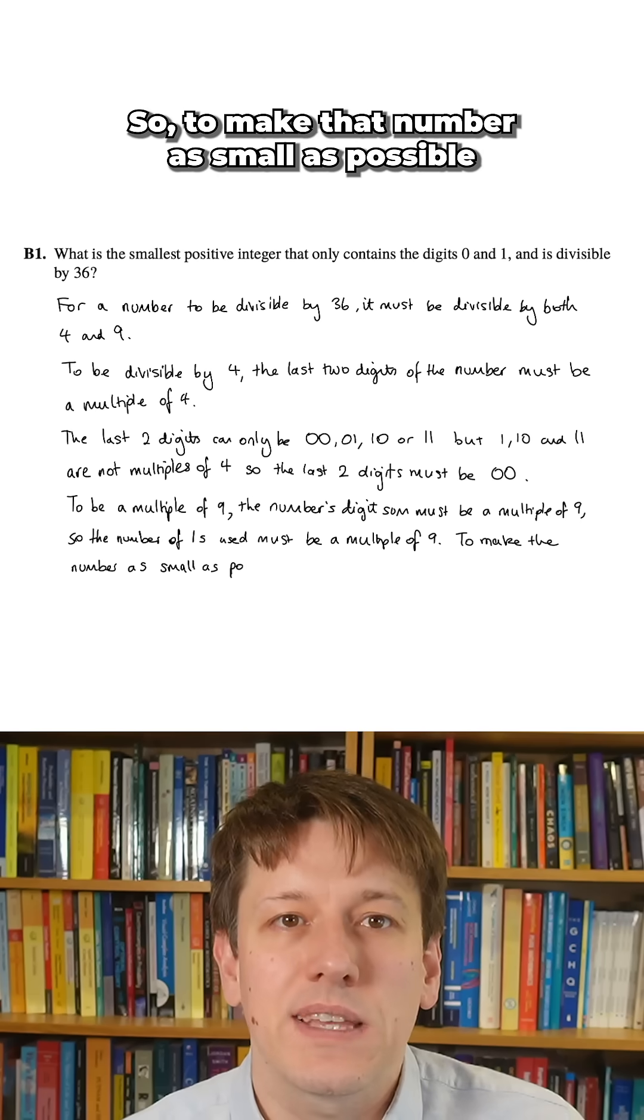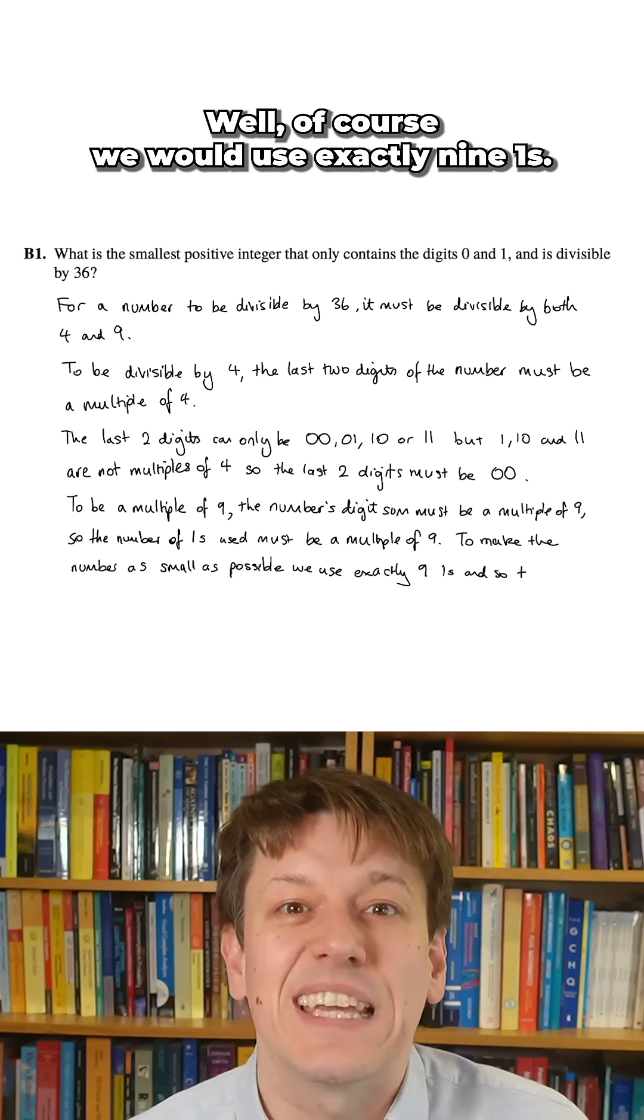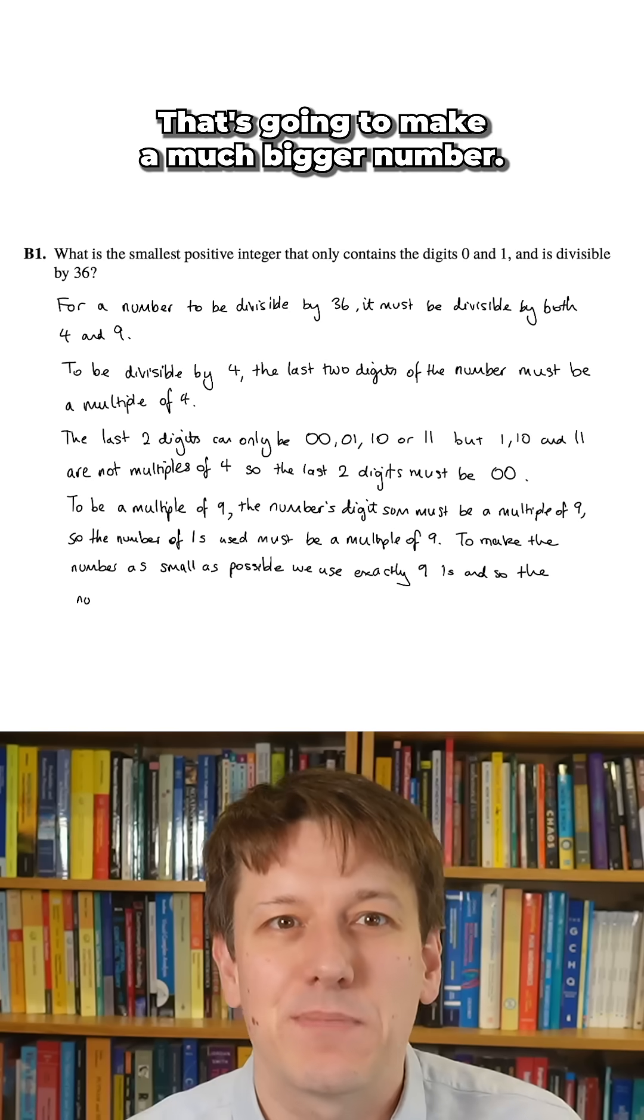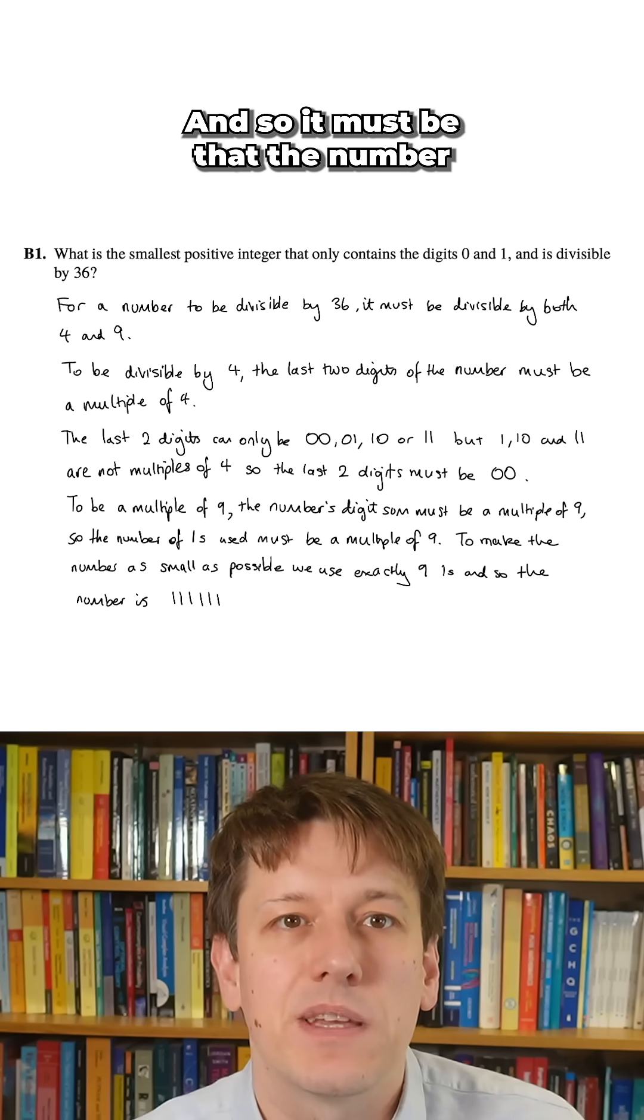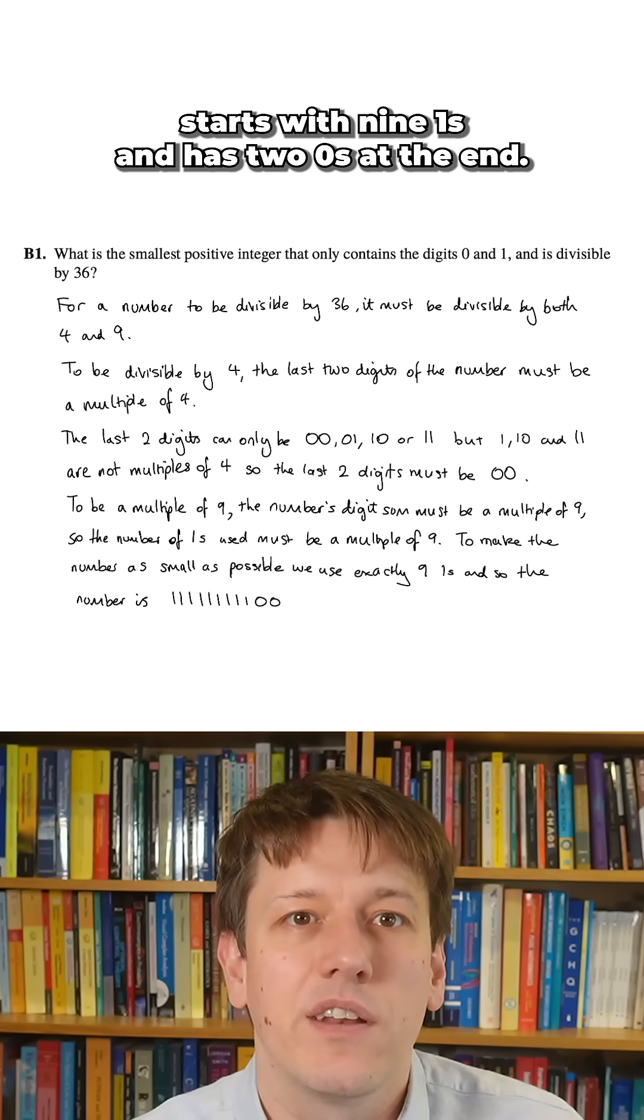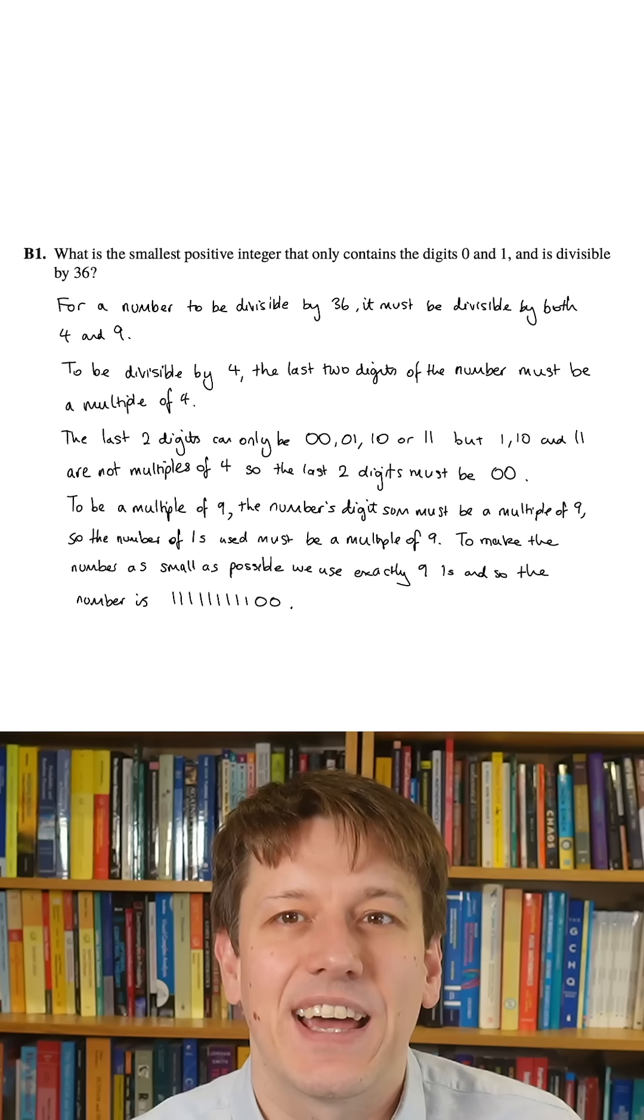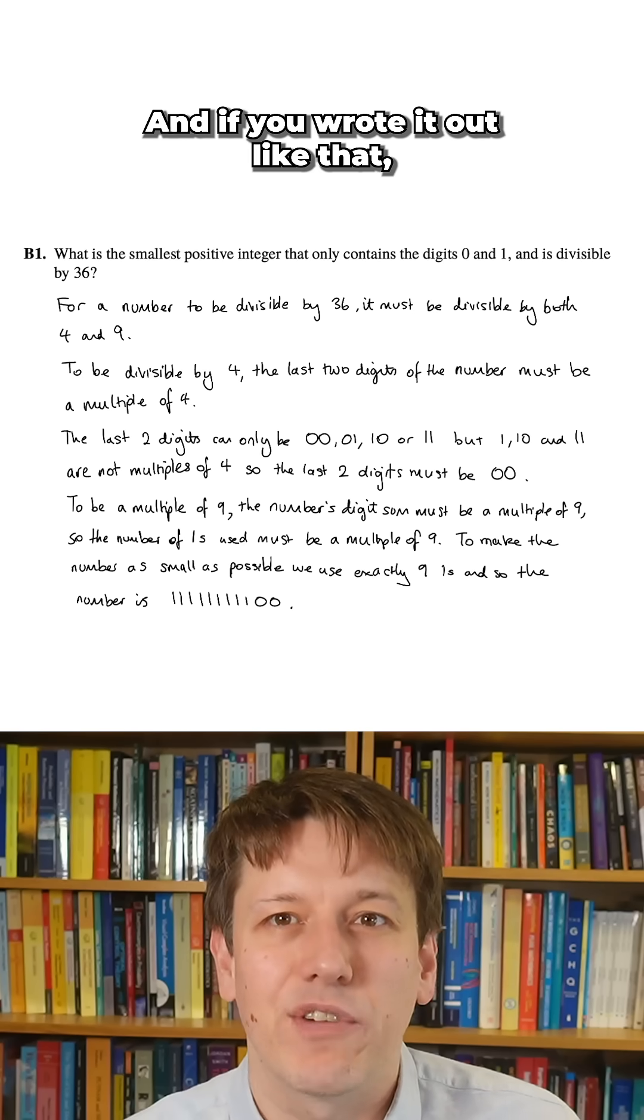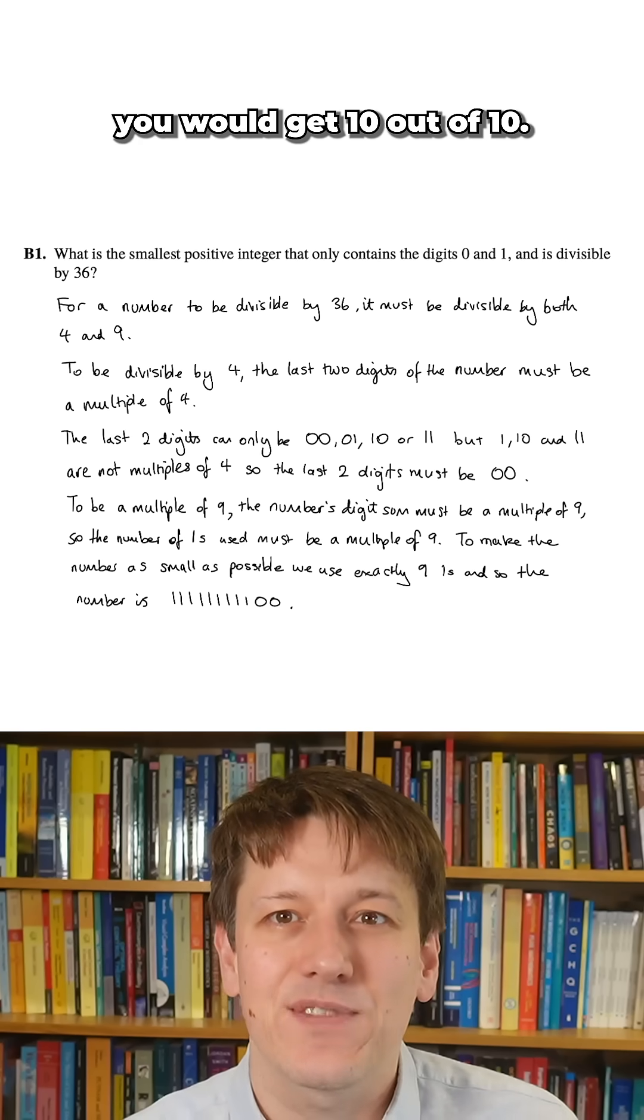To make that number as small as possible, how would we do it? Well, of course we would use exactly 9 ones - we wouldn't want to use 18 or 27 ones, that's going to make a much bigger number. So it must be that the number starts with 9 ones and has 2 zeros at the end. That is the smallest number that satisfies the condition of this question, and if you wrote it out like that, you would get 10 out of 10.